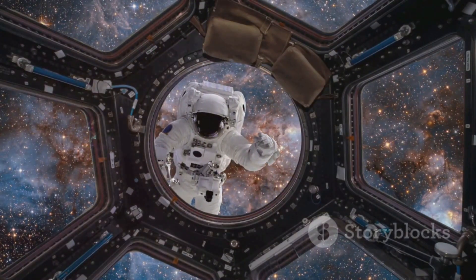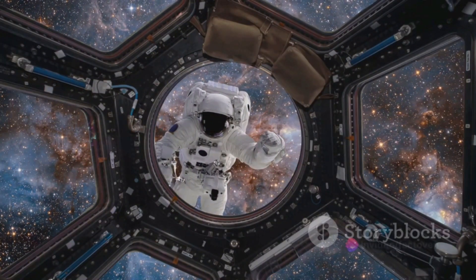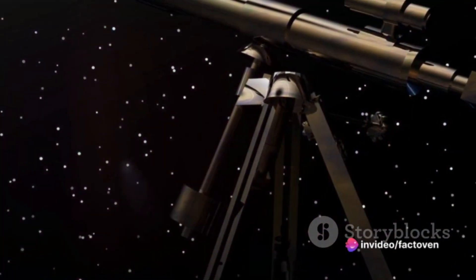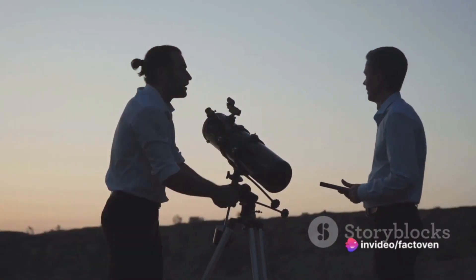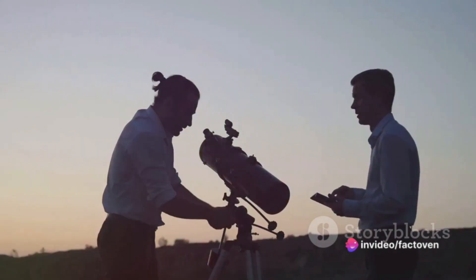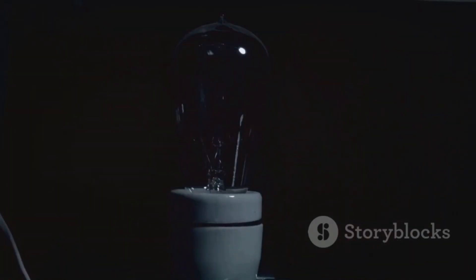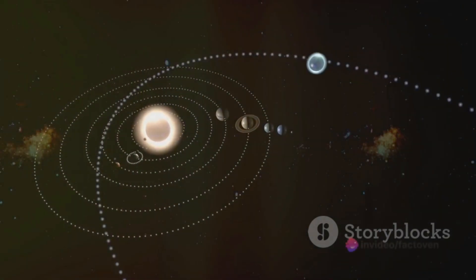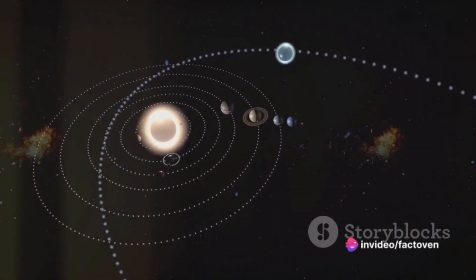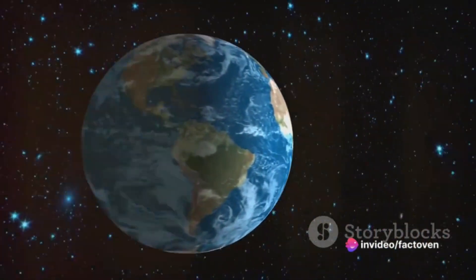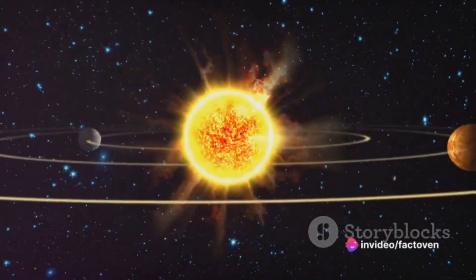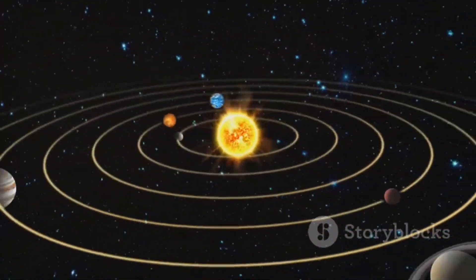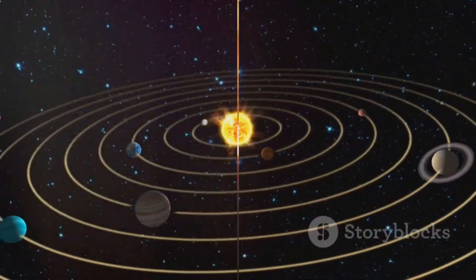Our grasp of the cosmos has not always been as it is now. It has been a journey of discovery, a journey that began with the revolutionary ideas of Copernicus in the 16th century. Copernicus proposed a model of the universe that was quite radical for the time. He suggested that the Sun, not the Earth, was at the center of the universe. This heliocentric model was a stark departure from the widely accepted geocentric model that placed the Earth at the center of the cosmos.